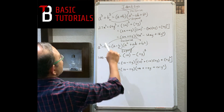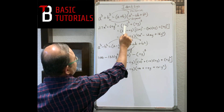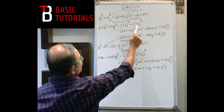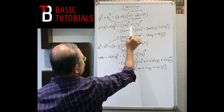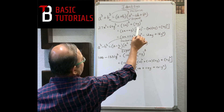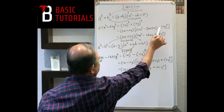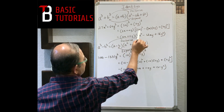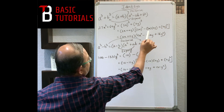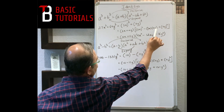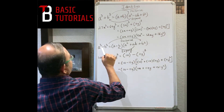Example: 27x³ + 64y³. Write 27x³ = (3x)³ and 64y³ = (4y)³. Using a³+b³ = (a+b)(a²-ab+b²): (3x+4y)[(3x)² - (3x)(4y) + (4y)²] = (3x+4y)(9x² - 12xy + 16y²).